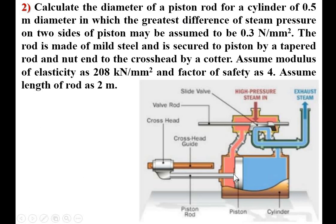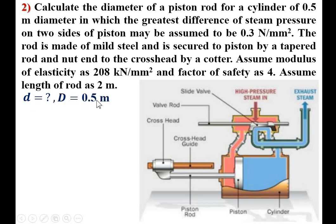Understanding the figure: the piston reciprocates inside the cylinder with different steam pressures on each side — pressurized steam on one side and exhaust steam on the other. We want to find the diameter d of the piston rod. Capital D (cylinder diameter) = 0.5 m. Pressure difference p = 0.3 N/mm². Modulus of elasticity E = 208 kN/mm².